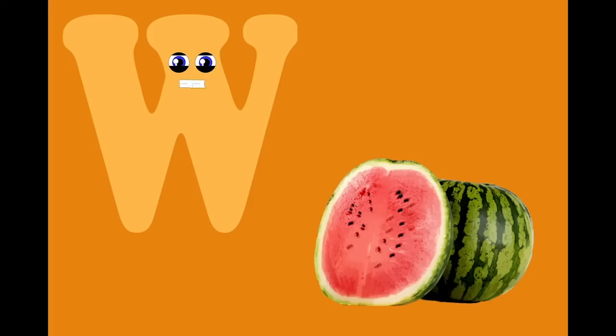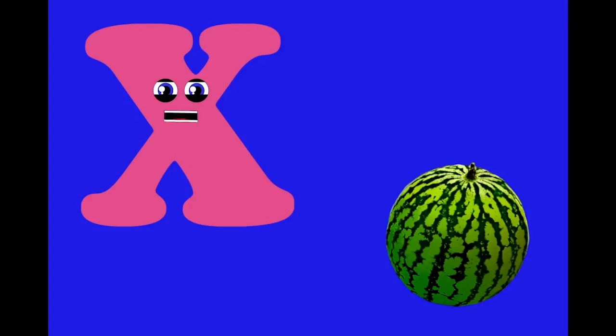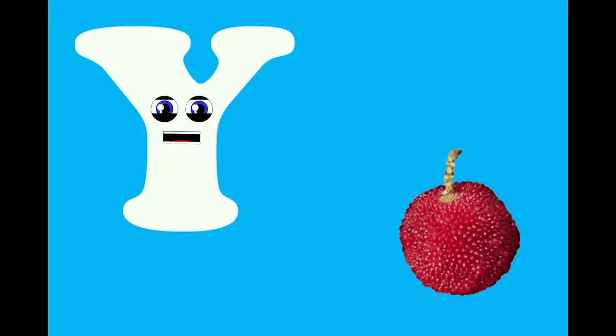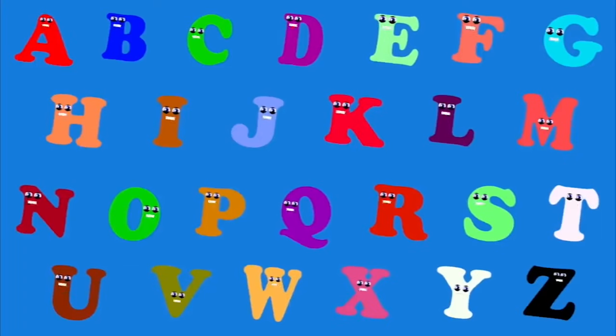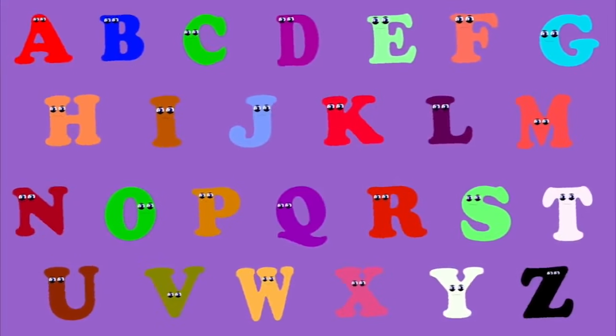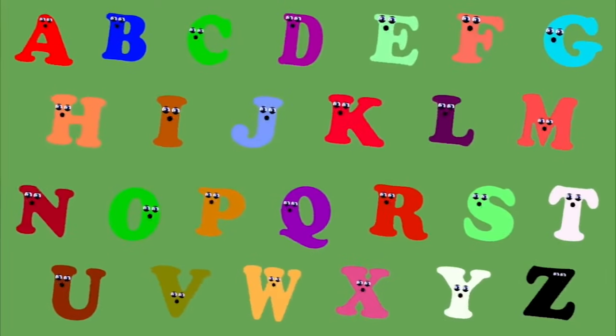U — it is the first letter of ugly fruit. V — it is the first letter of vanilla. W — it is the first letter of watermelon. X — it is the first letter of xylocarp. Y — it is the first letter of youngberry. Z — it is the first letter of zucchini. This is a fruit phonics song, so come and sing along. Eat your fruit every day and you will grow real strong.